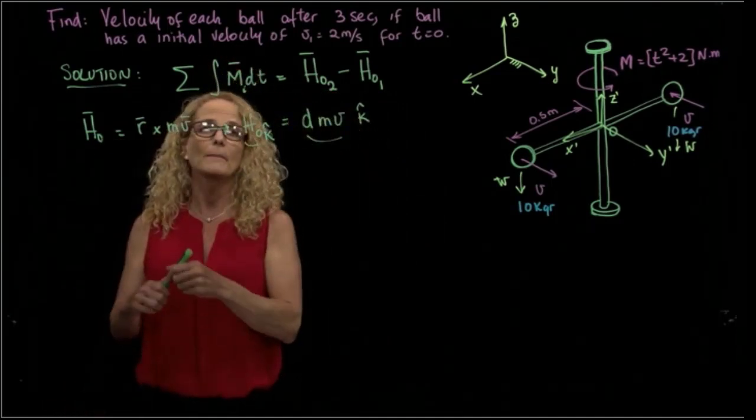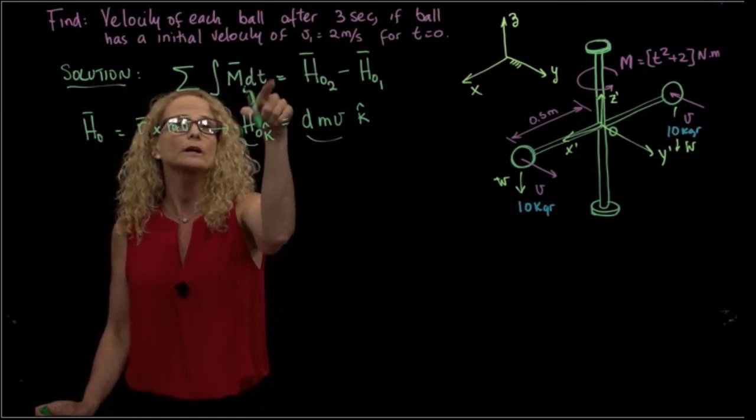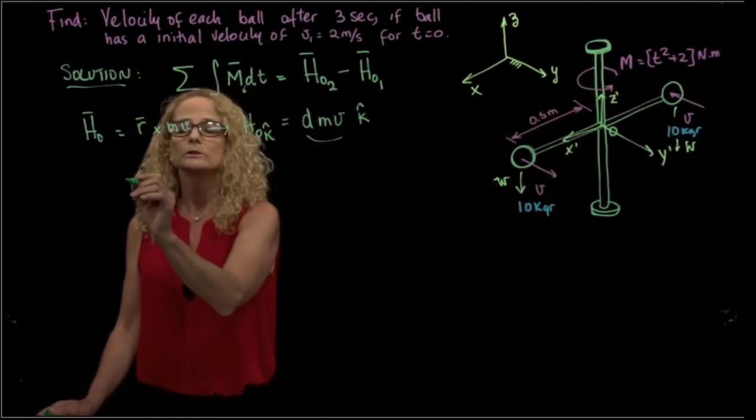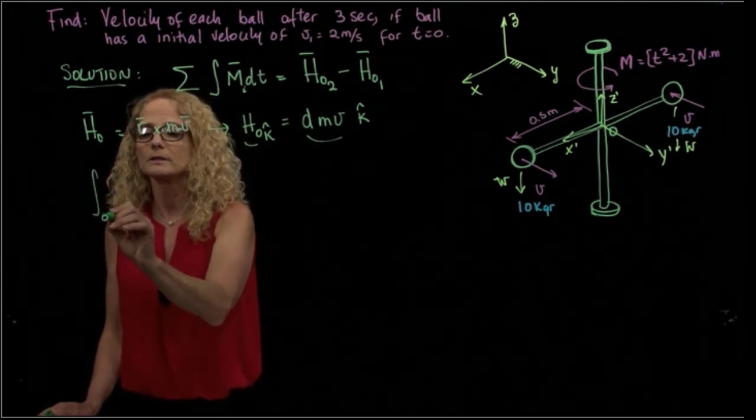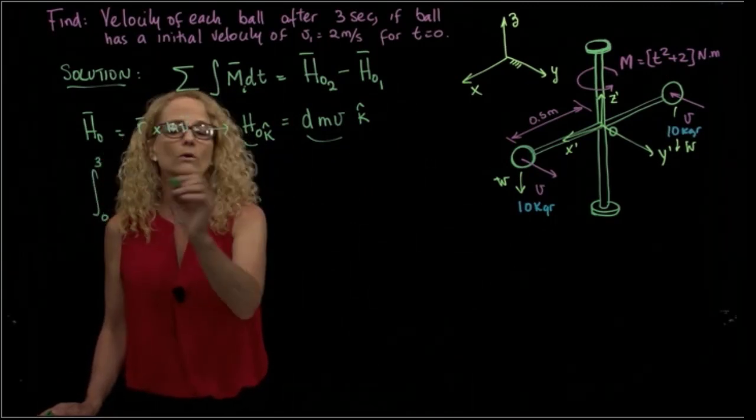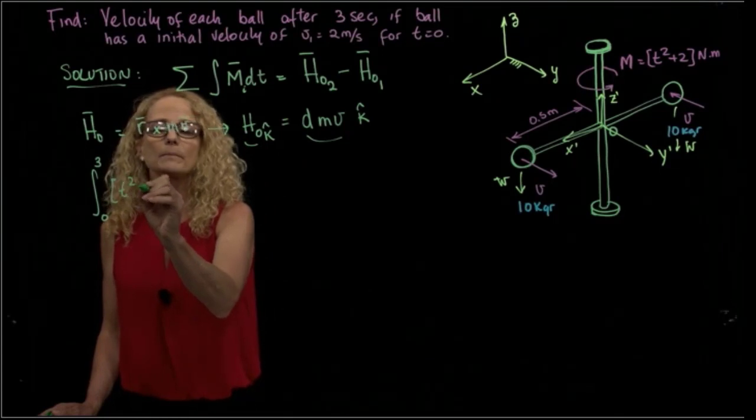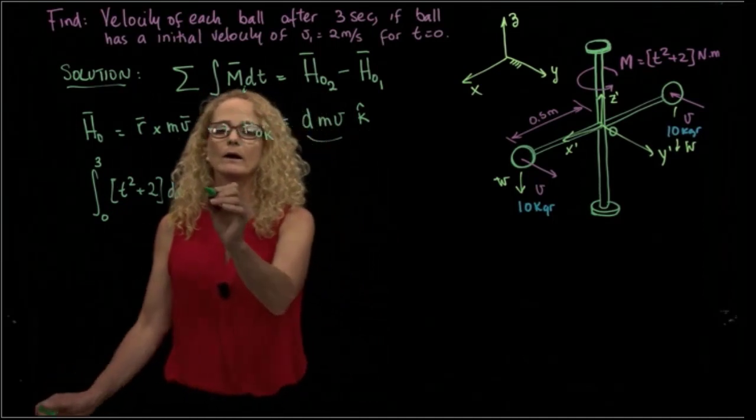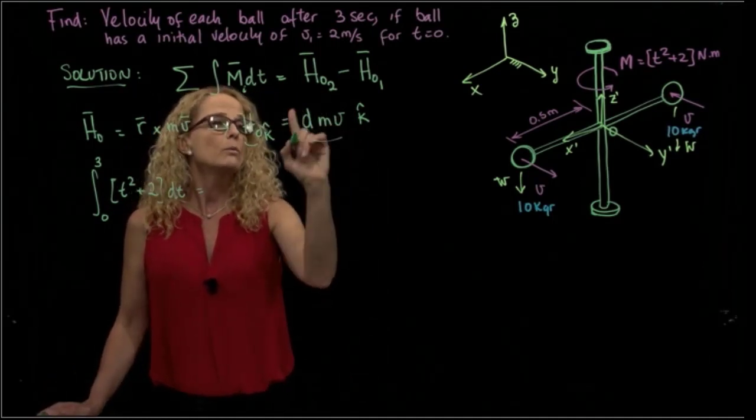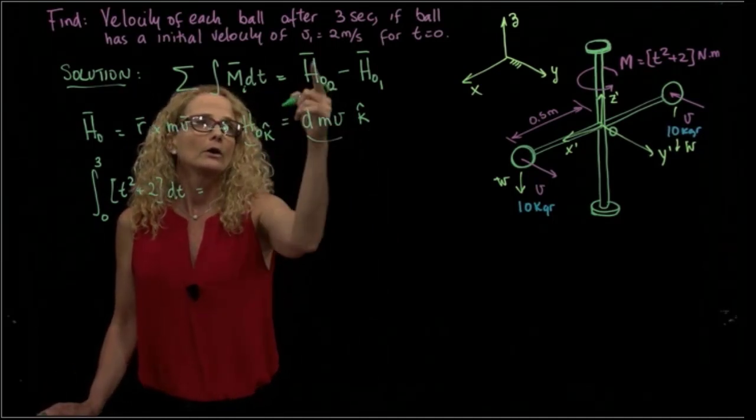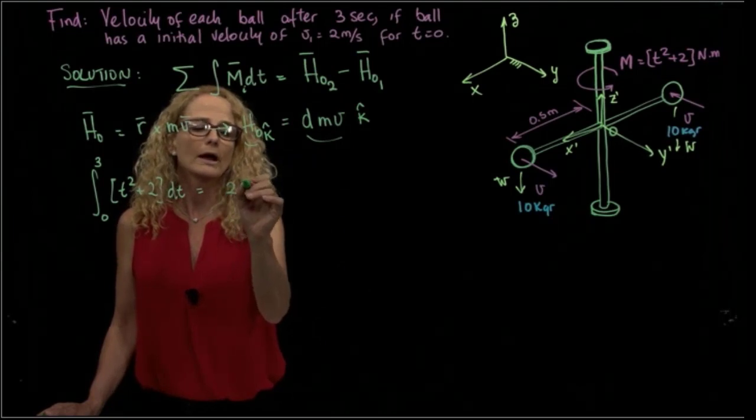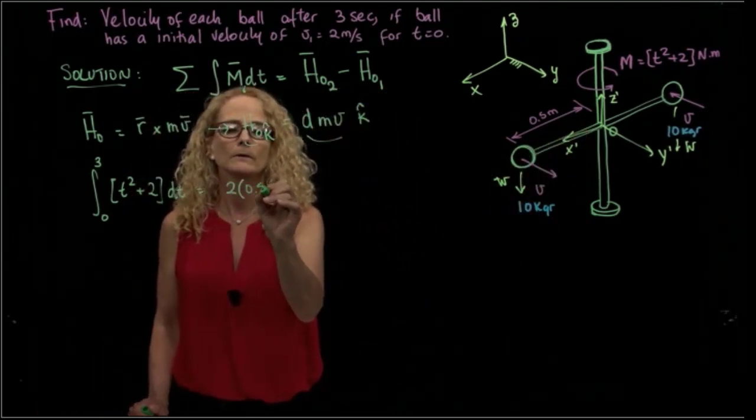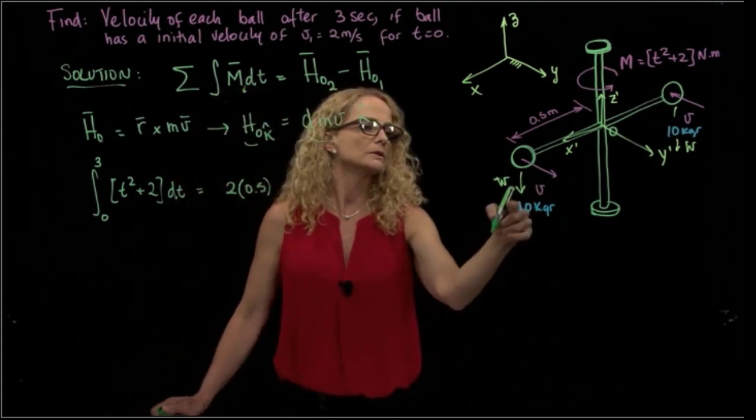We apply our equation, and here we have only one momentum, which is that that is applied. So we have the integral between 0 and 3 seconds of t squared plus 2 dt, and then we have the two balls. So we will have two times the distance, which is 0.5, times the mass,